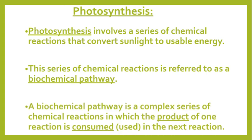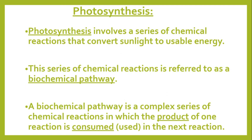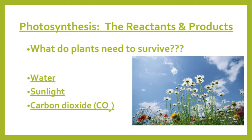A biochemical pathway is a complex series of chemical reactions in which the product of one reaction is used in the next reaction. So looking at photosynthesis — reactants and products — a reactant is what you need in order for the reaction to occur. Say you have a big sports game coming up; one thing you might do is eat ahead of time. You are putting that into your body in order for your body to give you energy — that would be the reactant, whatever you're consuming.